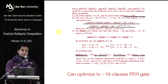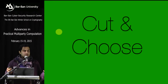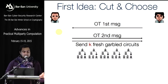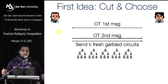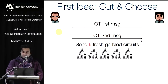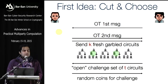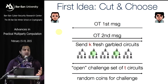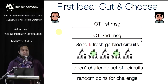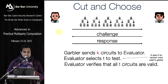A better way — used by many people — is the classic cut-and-choose technique. Instead of sending one garbled circuit, we send k fresh garbled circuits. Bob asks for some fraction to be opened — show all coins used to produce the circuit — and checks that the tested circuits are correct. The remaining unopened ones are used for evaluation. The garbler sends k circuits, the evaluator selects a fraction t to test, verifies they're all valid, and evaluates the rest.